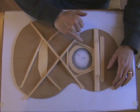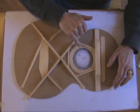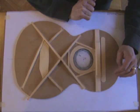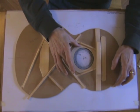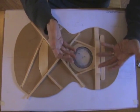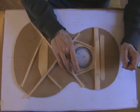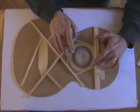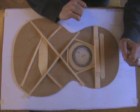And if you remember from the rosette video, we've got this thin veneer here of maple and that's just reinforcing the area where the rosette is. Once the rosette's set in, there's only about a millimeter and a half of soundboard there, so it does need a little bit of support.